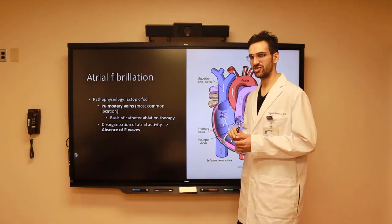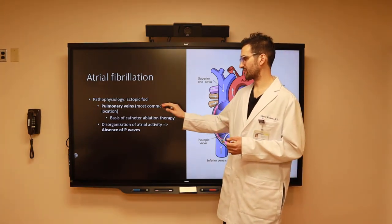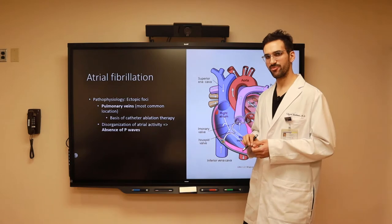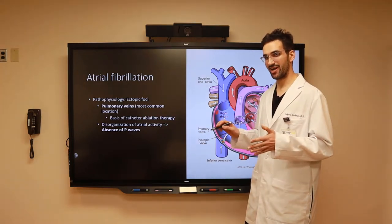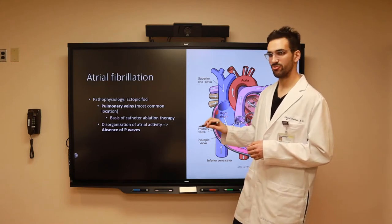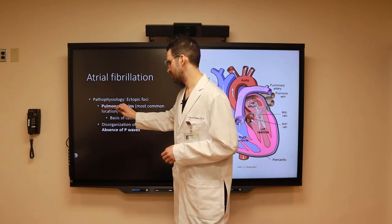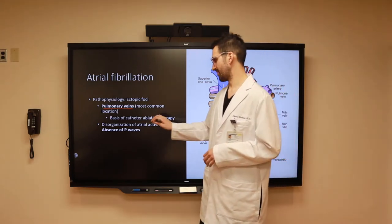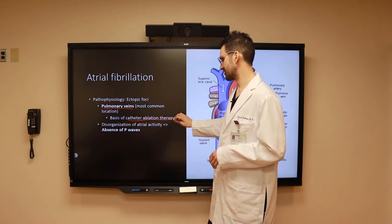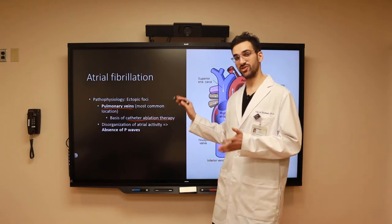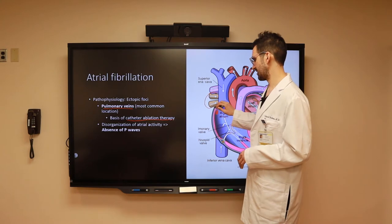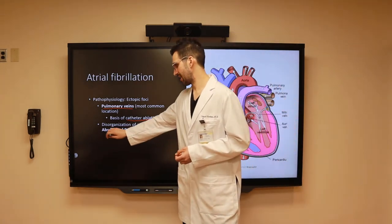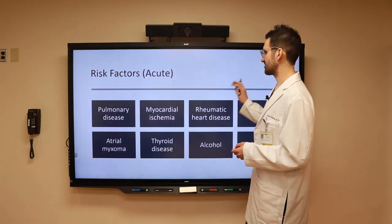The pathophysiology of atrial fibrillation is an ectopic focus other than the sinoatrial node, which is classically located in the right atrium. In atrial fibrillation, the focus can be coming from anywhere else, often in the upper chambers of the heart, and classically the most common location is the pulmonary veins. This is the basis of catheter ablation therapy, which addresses the underlying pathophysiology by ablating the pulmonary veins. Additionally, these patients are going to have disorganization of their atrial activity, resulting in an absence of P waves on their EKG.